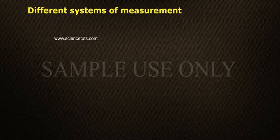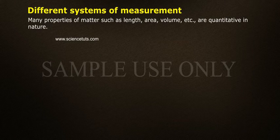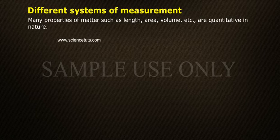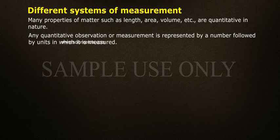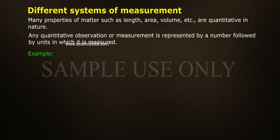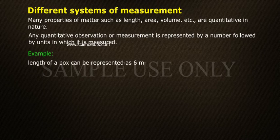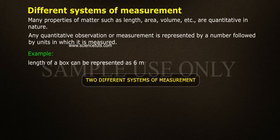Different systems of measurement. Many properties of matter such as length, area, and volume are quantitative in nature. Any quantitative observation or measurement is represented by a number followed by the units in which it is measured. For example, the length of a box can be represented as 6 meters. There are two different systems of measurement.